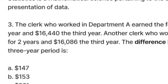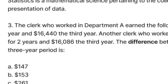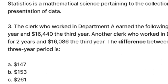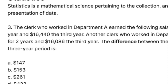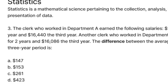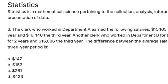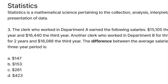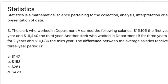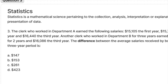Here's the question. The clerk who worked in Department A earned the following salaries: $15,105 the first year, $15,750 the second year, and $16,440 the third year. Another clerk who worked in Department B for three years earned $15,825 a year for two years and $16,086 the third year.